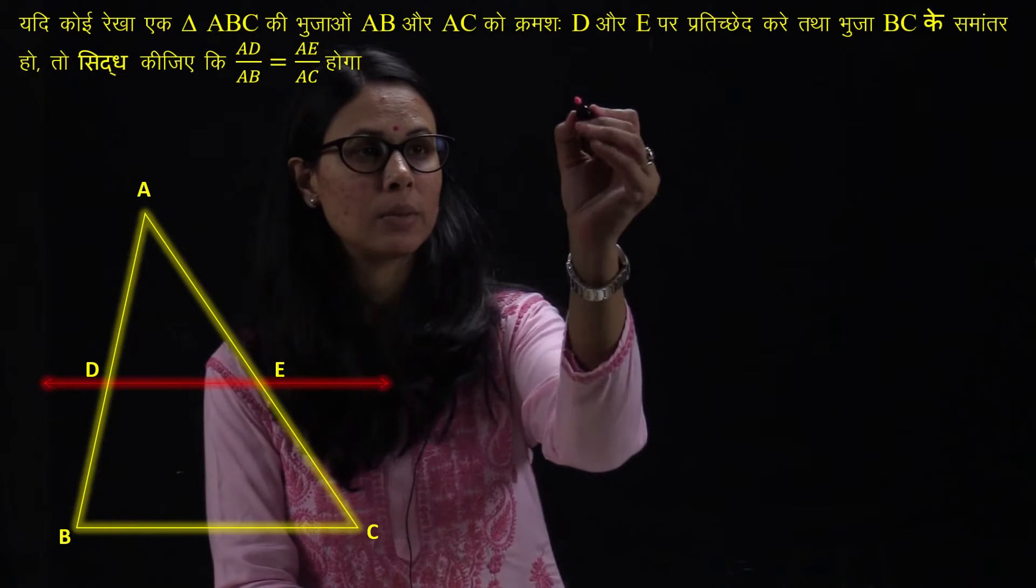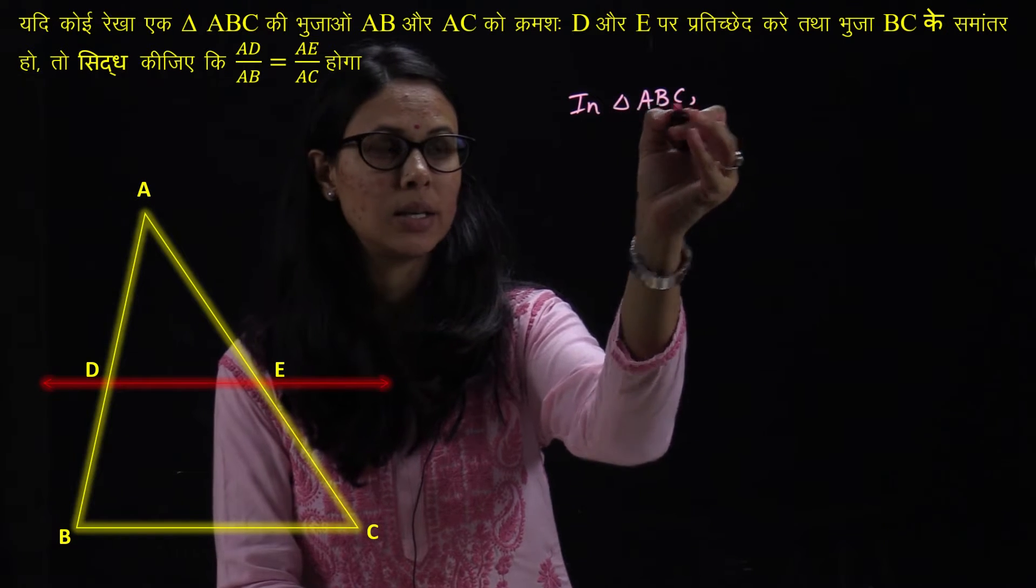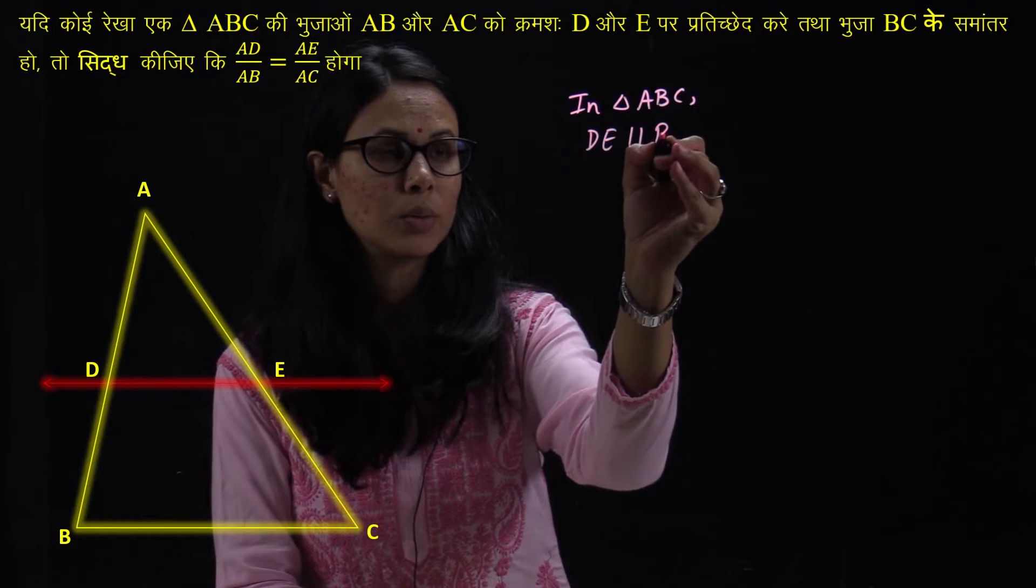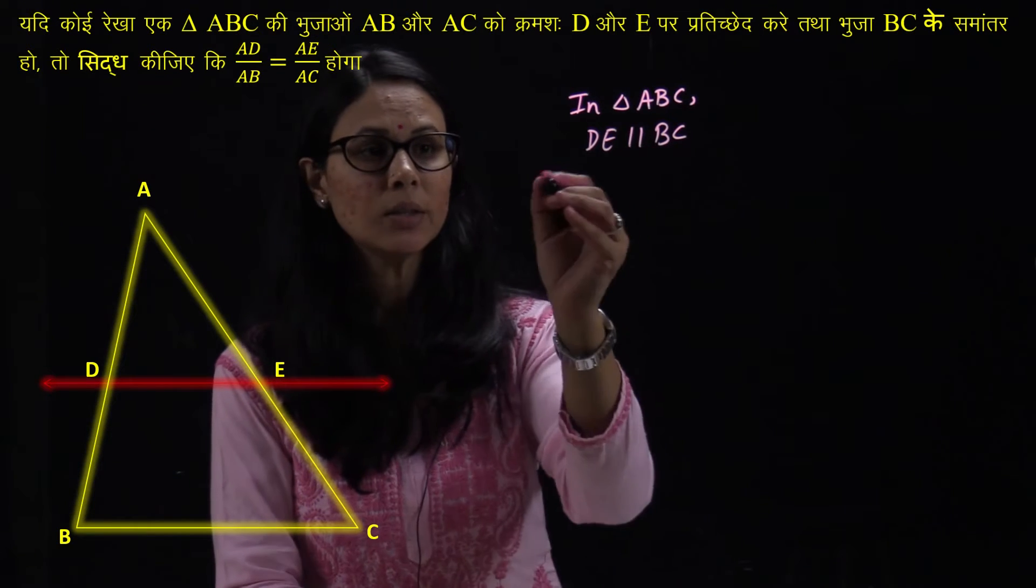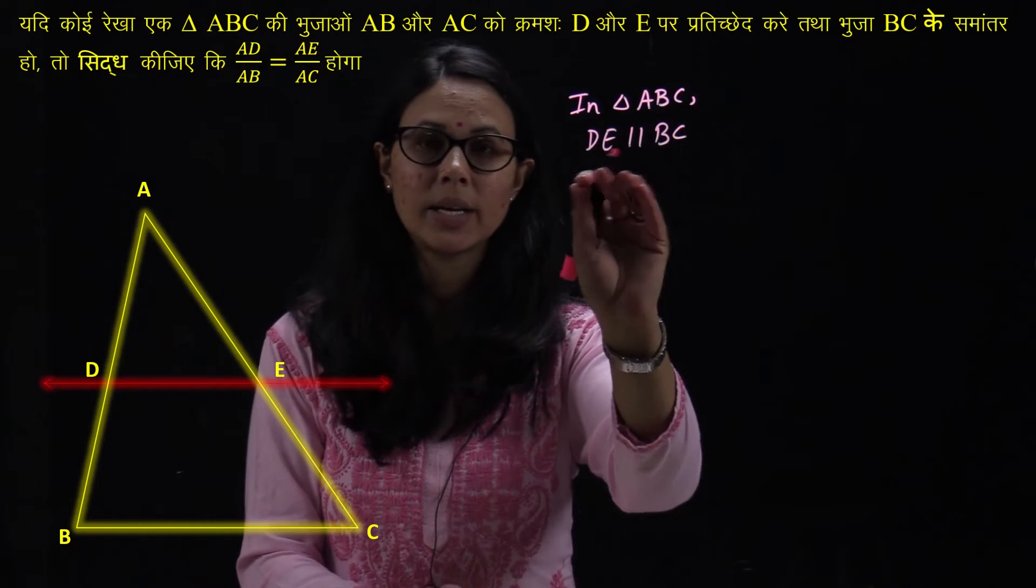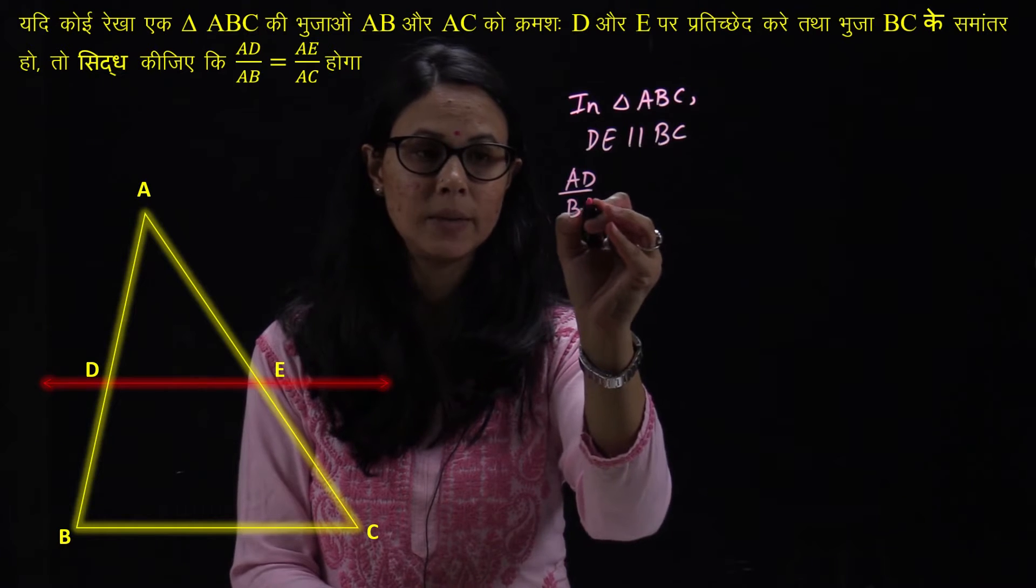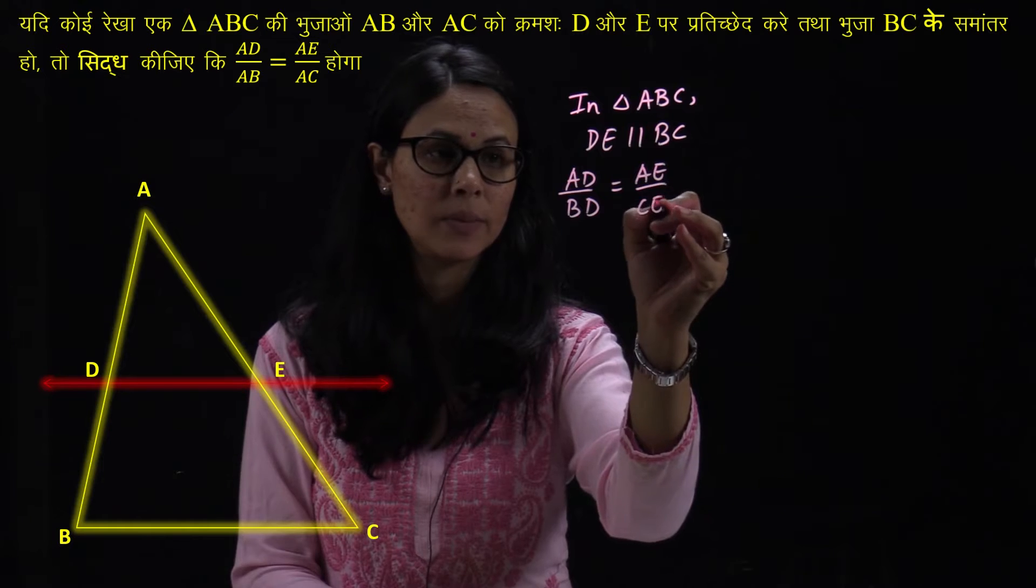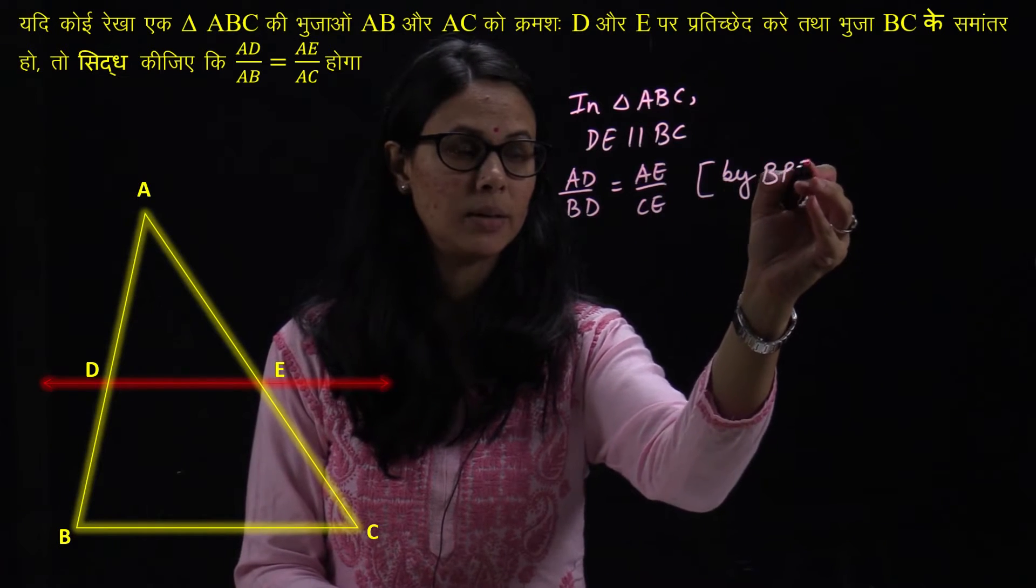First of all, we will see in triangle ABC. This is what we call DE is parallel to BC. Right? We have given them. So, if it is parallel then it means AD upon BD is equal to AE upon CE. What reason is by BPT?